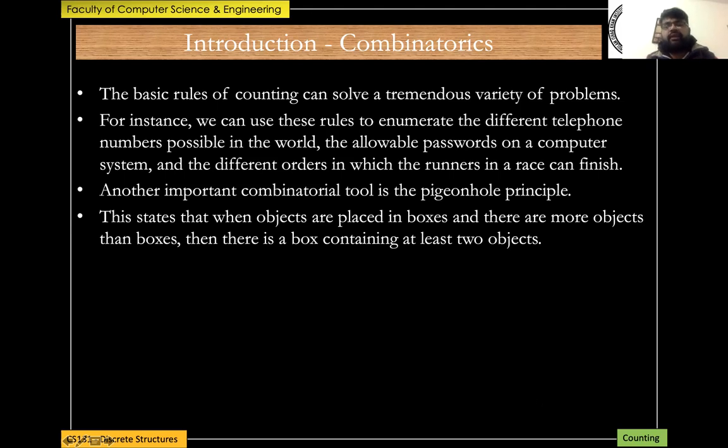The pigeonhole principle simply states that when objects are placed in boxes and there are more objects than boxes, then there is a box containing at least two objects. For example, if you have got a million people and you want to assign a six-digit telephone number to each, then there will be at least two persons who will be sharing the same phone number. This is all what we can get from the pigeonhole principle because there are more objects than the number of boxes, so at least there is one box that contains more than one object.